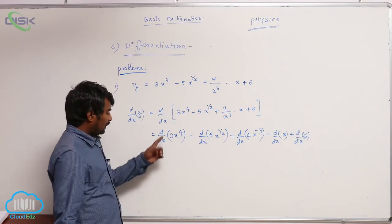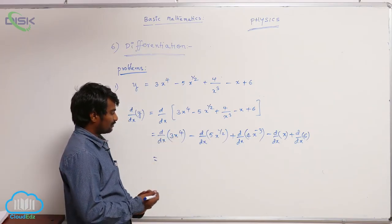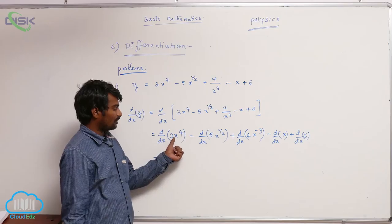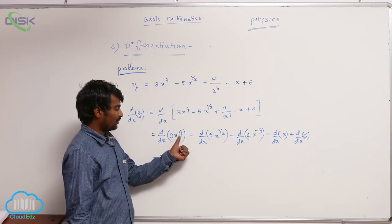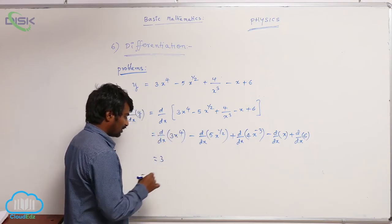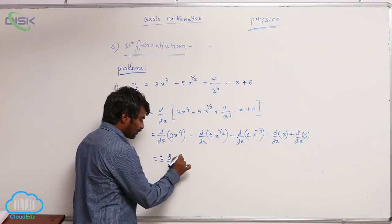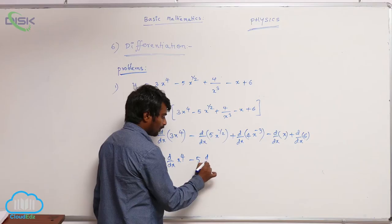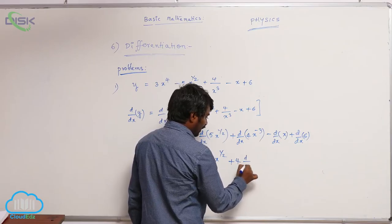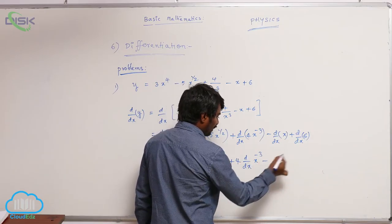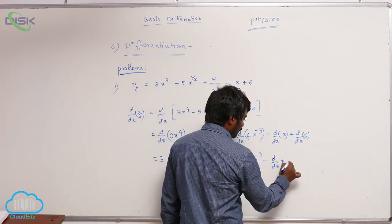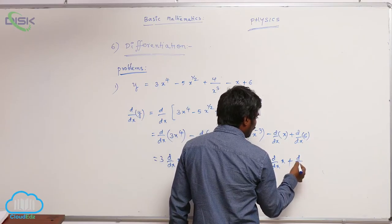Again, it is like d/dx of k times f(x). 3 is constant. In our formula k is also constant and x^4 I am taking as f(x). So what I have written? k times d/dx of f(x). Here also same: 3 times d/dx of x^4 minus 5 times d/dx of x^(1/2) plus 4 times d/dx of x^(-3) minus d/dx of x plus d/dx of 6.